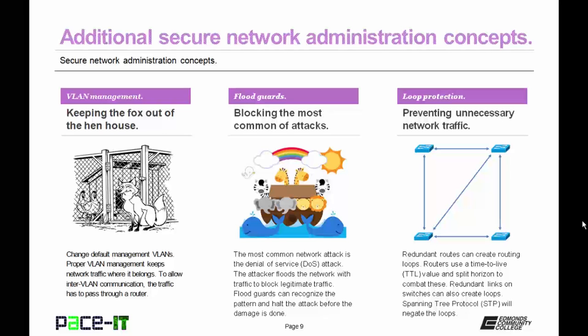Then there's loop protection — this is preventing unnecessary network traffic. Redundant routes can create routing loops. Routers use a time-to-live value and split horizon to combat routing loops. Redundant links on switches can also create loops within a switch network. Spanning Tree Protocol, or STP, will negate these loops from ever occurring.